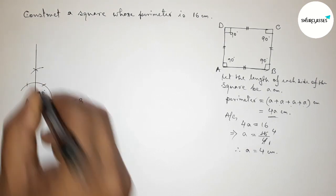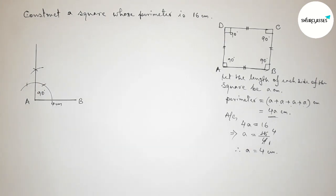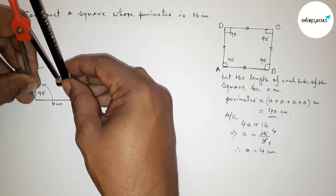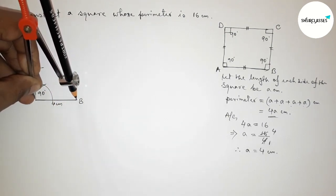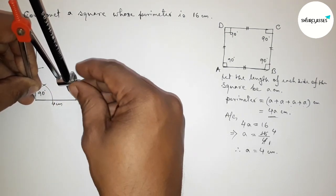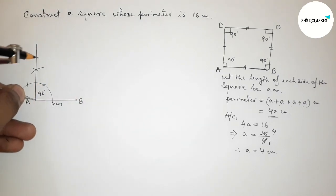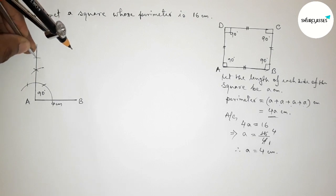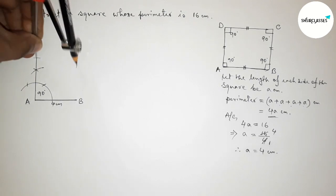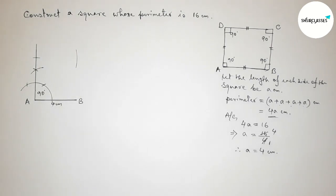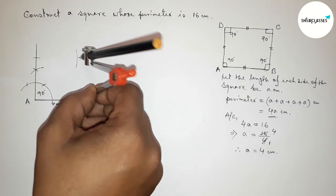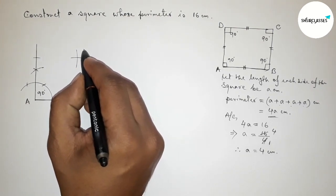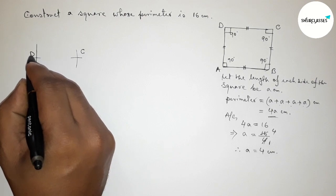Taking the length AB = 4 centimeters using the compass and cutting the same length along the perpendicular at A. Then placing the compass on point B and with the same length drawing an arc, cutting to locate the remaining point. Taking point D on the perpendicular from A and point C at the intersection.